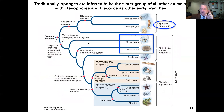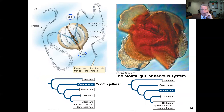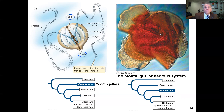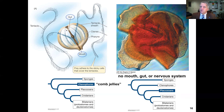The earliest diverging lineages in the historical phylogeny were the ctenophores — comb jellies — and the placozoans. Placozoans are a weird group with no mouth, no gut, and no nervous system. Ctenophores have sticky cells covering their tentacles to which prey adhere, then are brought into the mouth. So ctenophores have a mouth, a gut, and indeed a nervous system.